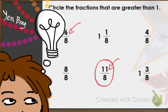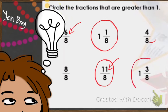4 over 8 is a proper fraction and it's not greater than 1. But 1 and 1 eighth is greater than 1 because we have a whole number 1 and a fraction 1 eighth. And 1 and 3 eighths is greater than 1 because we have a whole number 1 and a fraction 3 eighths. So these 3 fractions are greater than 1: we have two mixed numbers — 1 and 1 eighth, and 1 and 3 eighths — and one improper fraction, 11 over 8.